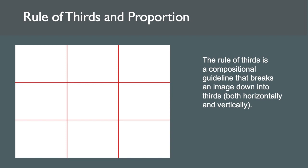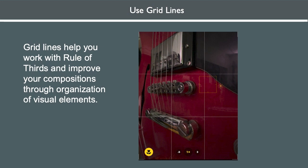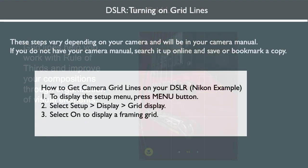Horizontal or vertical formats are acceptable for rule of thirds. Whether or not you're using a DSLR or a smartphone, turn on your grid lines. Grid lines help you work with rule of thirds and improve your compositions. I recommend keeping these on. The steps vary depending on your camera, so consult your manual. If you don't have a camera manual, search it up online and save or bookmark a copy.